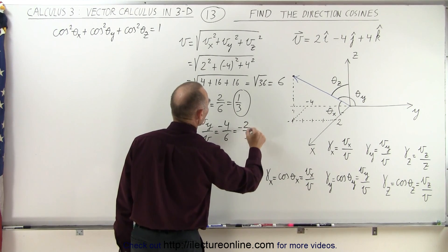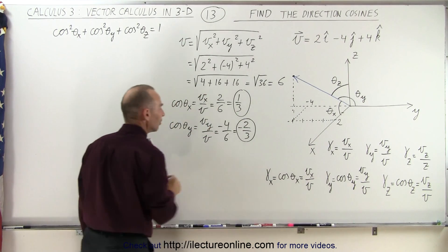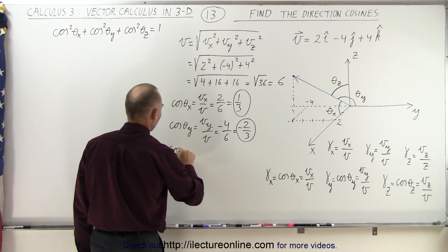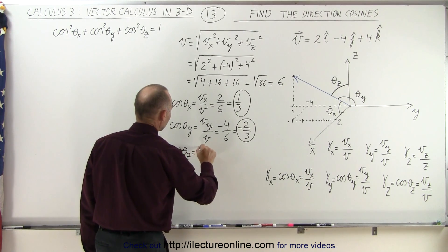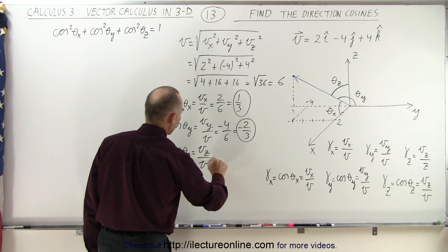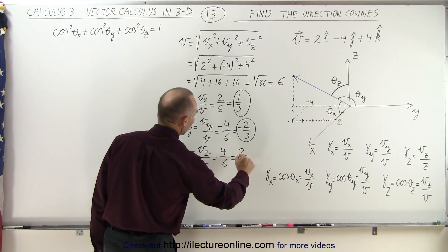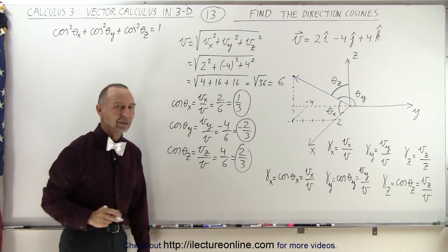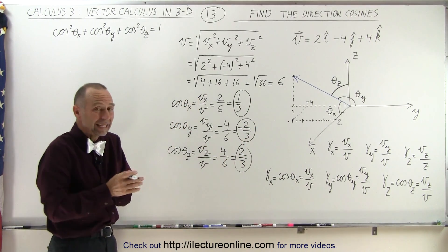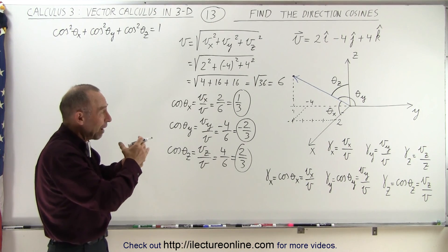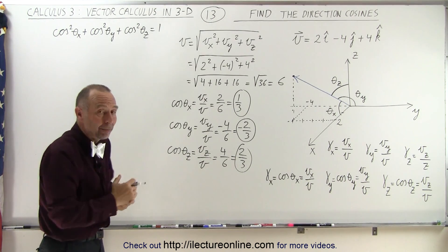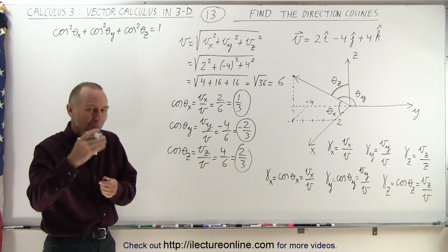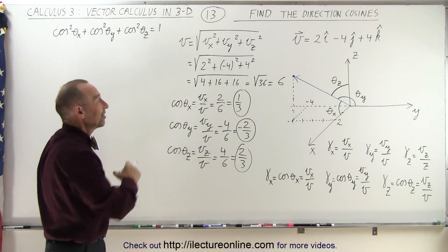Finally, the cosine of theta sub z equals v sub z over v, which is 4 divided by 6, which is 2 thirds. So those are the three direction cosines of that particular vector. Essentially they give you a feel for how big the angle is between the vector and the x, y, and z axes.